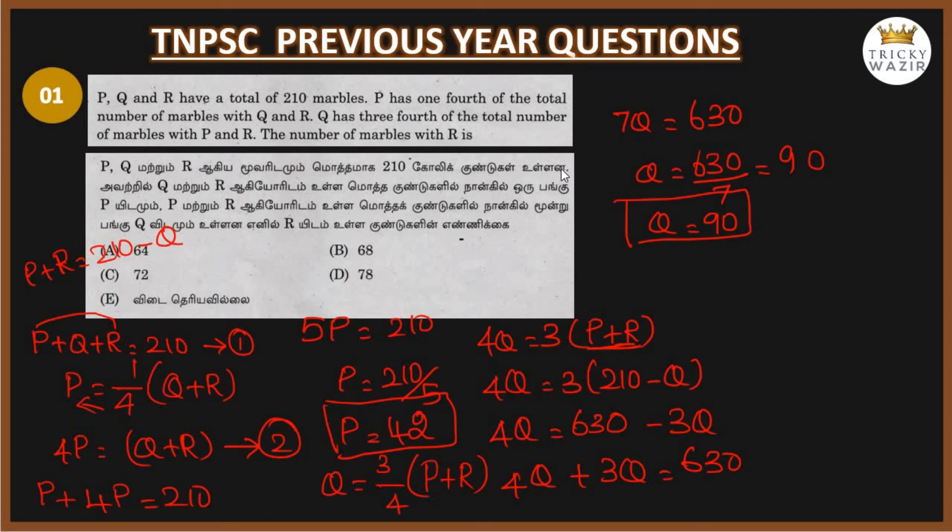P value is 42, Q value is 90. If we add P value 42 plus Q value 90 plus R equals 210, we get 132 plus R equals 210. So R equals 210 minus 132. R equals 78. The answer is 78 marbles. Option D, 78 is the correct answer. Thank you.